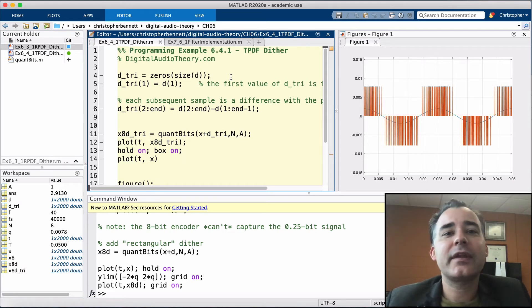On the other hand, if the value were to change from 0.9 to negative 0.9, then the difference, 1.8, is a much larger value. We will utilize backwards differencing to generate TPDF dither.